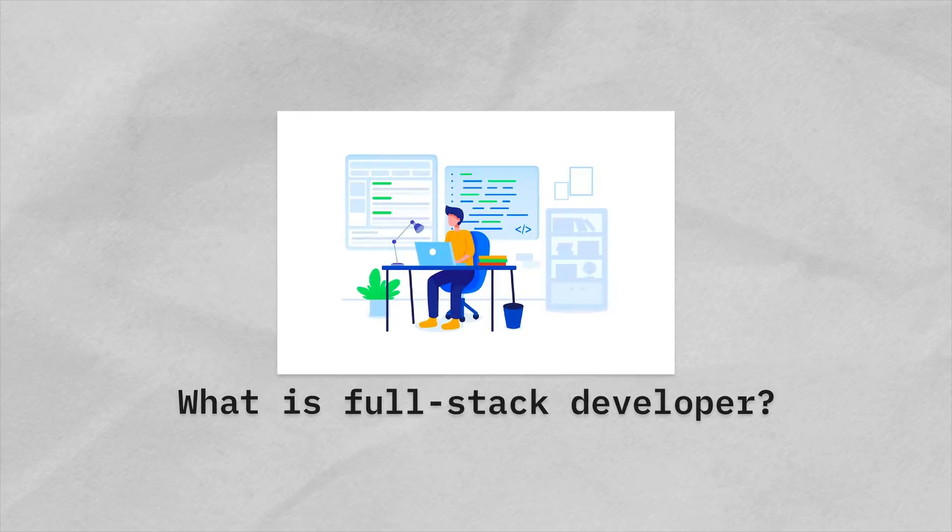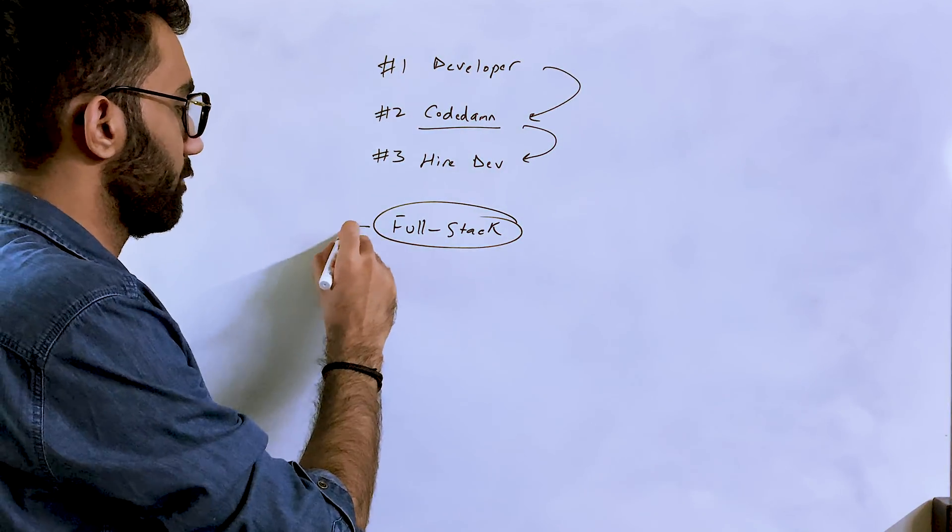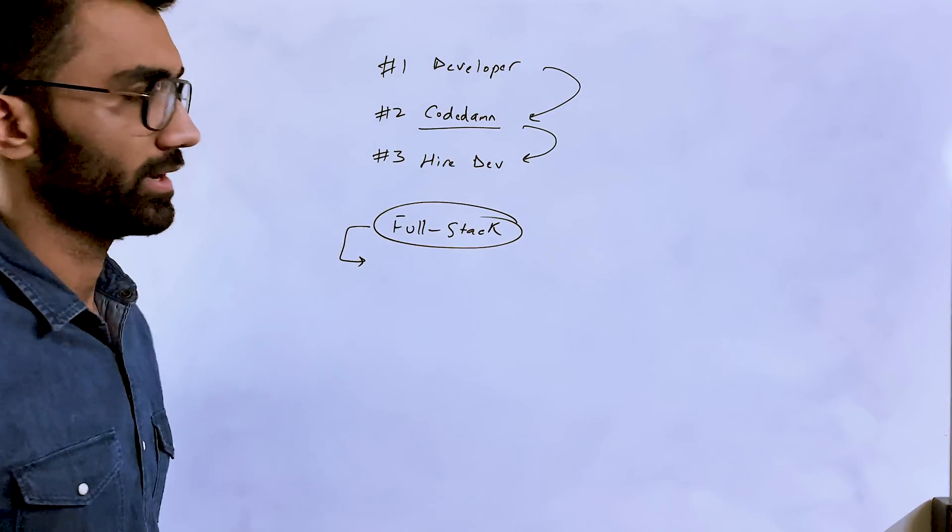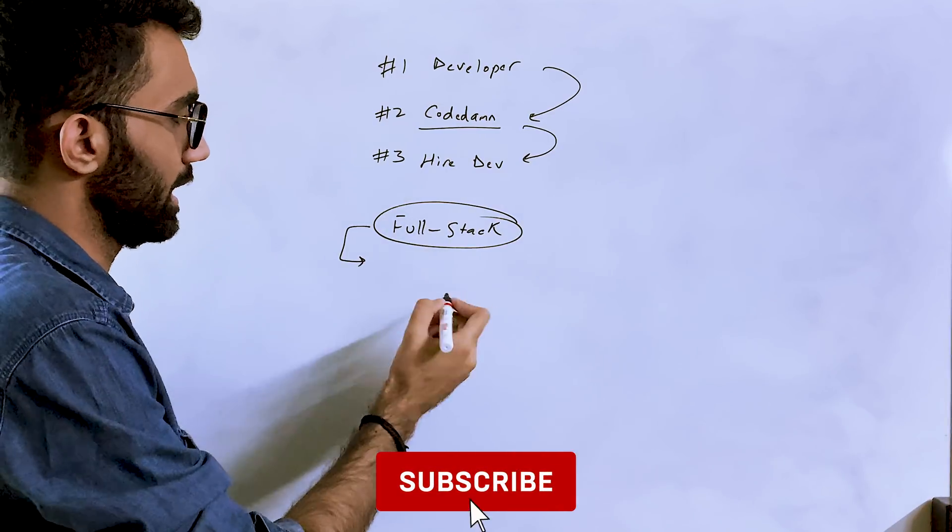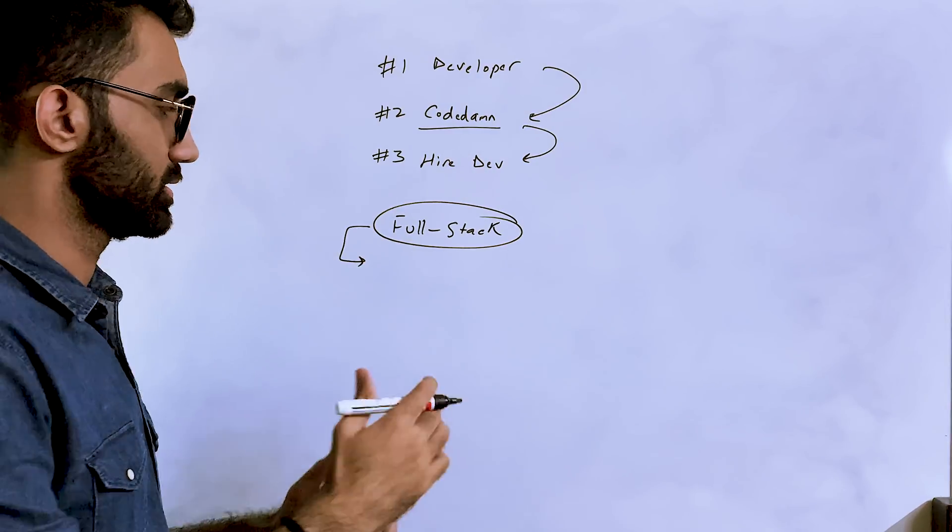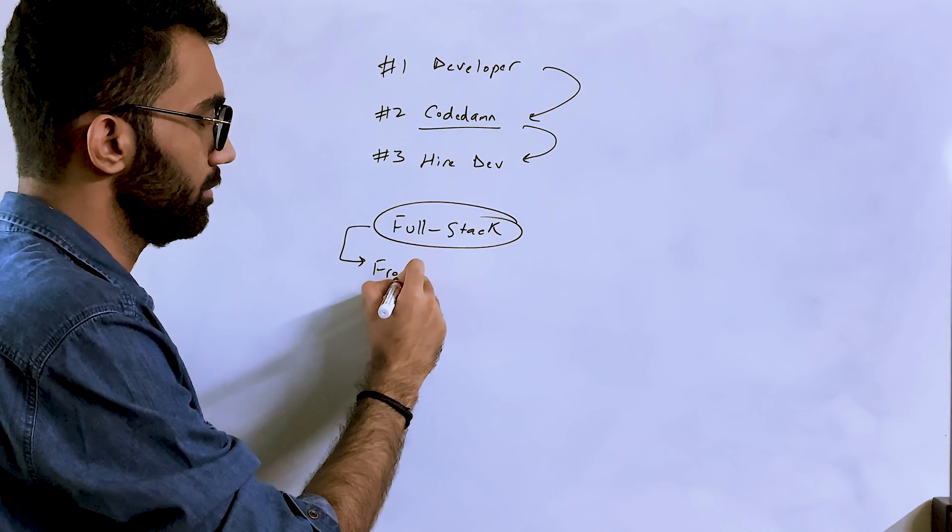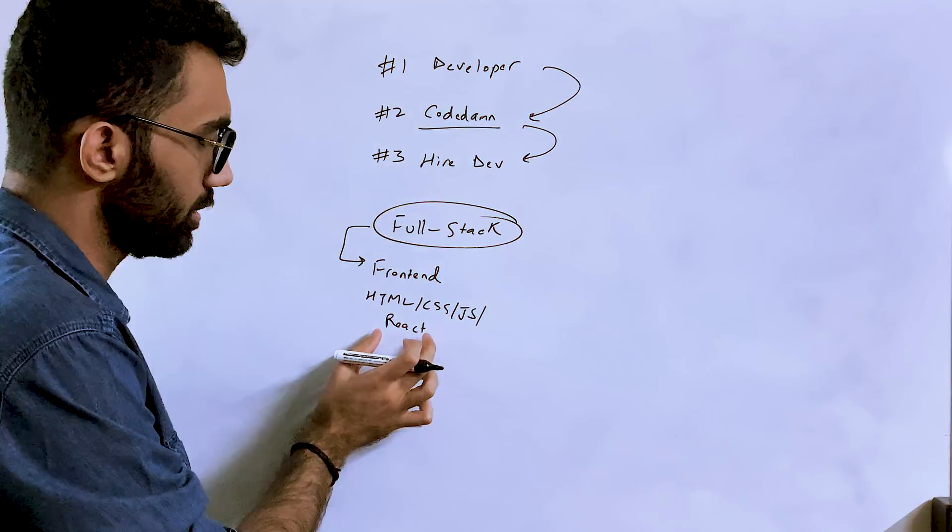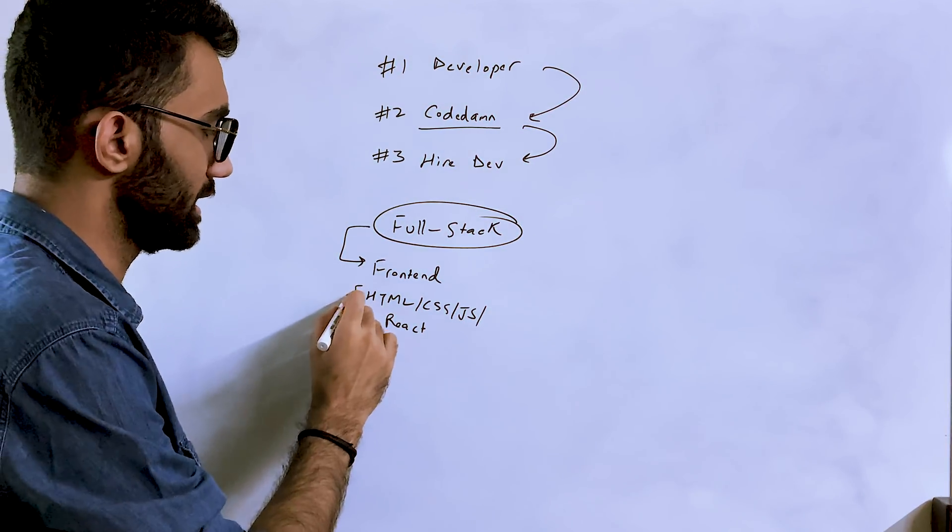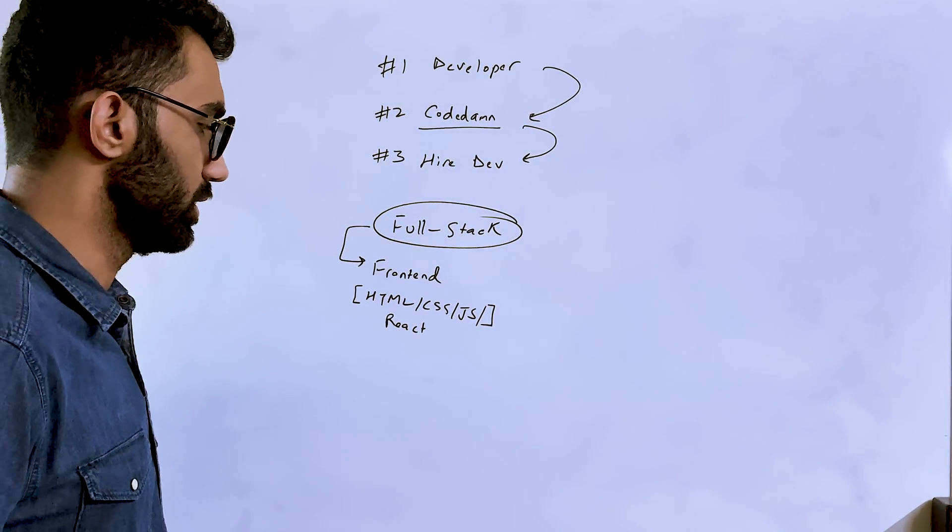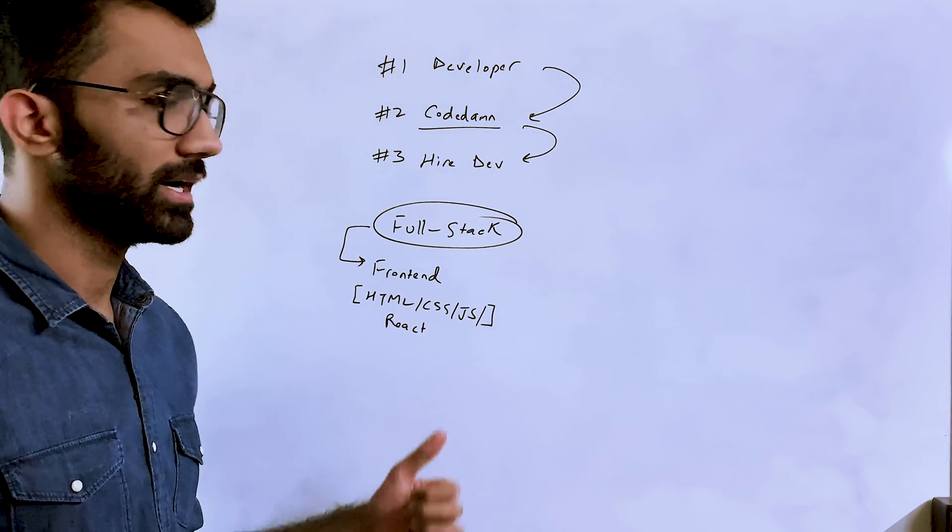What is a full stack developer? Let's start there. A full stack developer, at least for CodeDamn, needs to be able to work comfortably with front end - that is HTML, CSS, JavaScript, and in our case specifically React, because our tech stack is built on Next.js and React. Again, not a hard requirement - as long as you know how to work with these three technologies, you can learn React on the fly. It will take you a few months, but it's not a deal breaker.